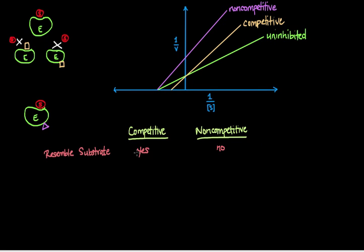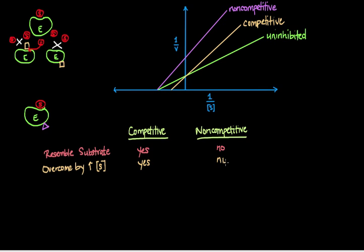Another key concept is whether the inhibitor can be overcome by an increase in substrate concentration. For competitive inhibitors, yes — as substrate concentration increases around these enzymes, the likelihood that a substrate molecule occupies the active site instead of the competitive inhibitor increases. At a certain point, increased substrate concentration will overcome the competitive inhibitor. For non-competitive inhibitors, the answer is no — they can bind to the enzyme and exert inhibitory effects even when the substrate is already bound, so it doesn't matter if the enzymes are maximally occupied by substrate.